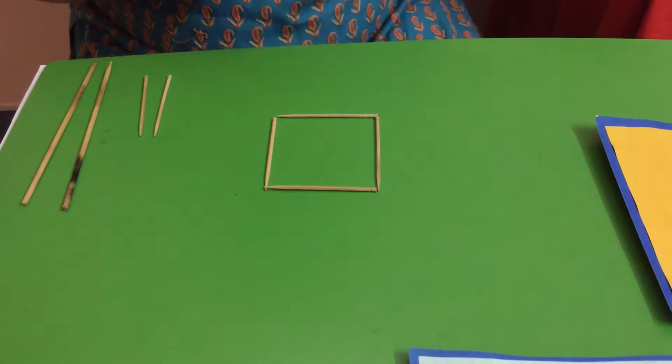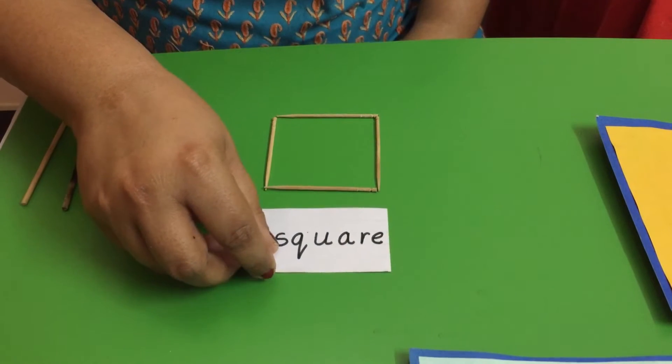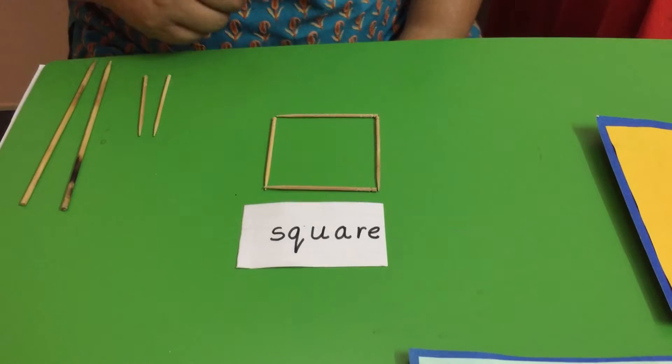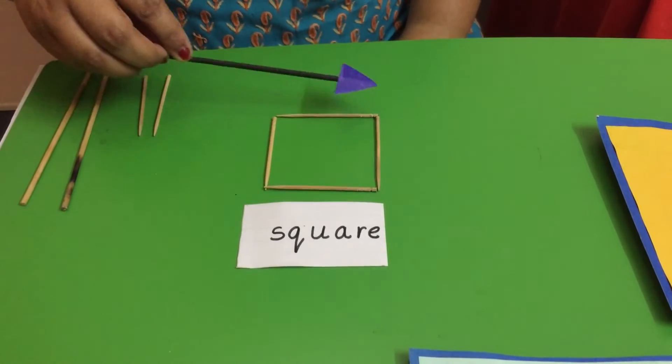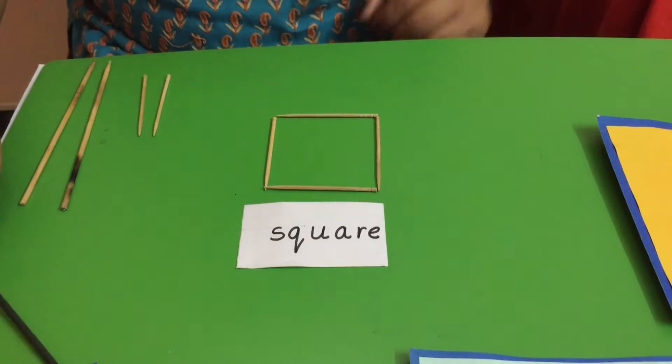So children, here you can see square and the word square looks like this. It has four equal sides and four corners.